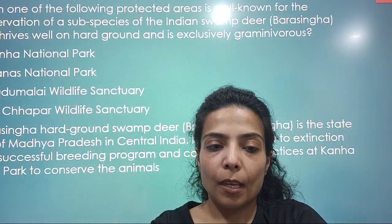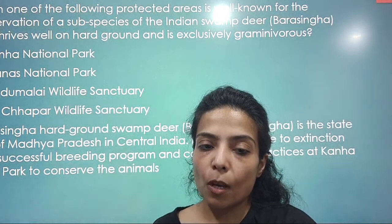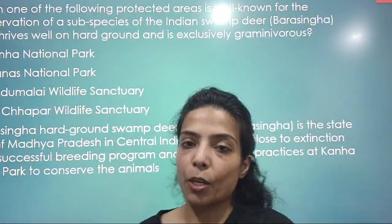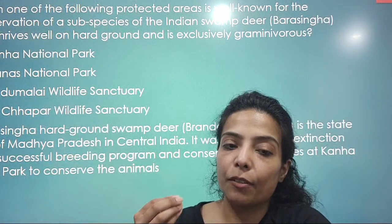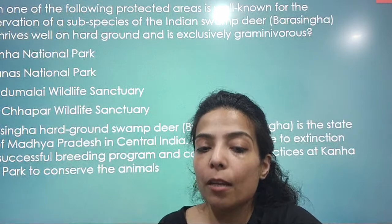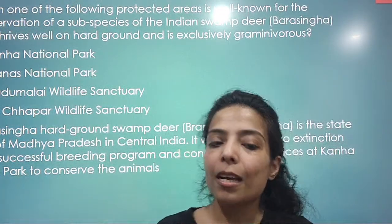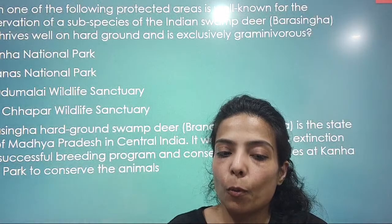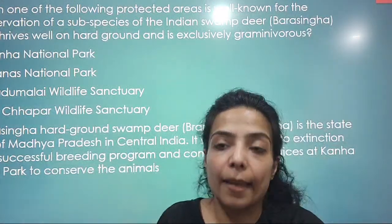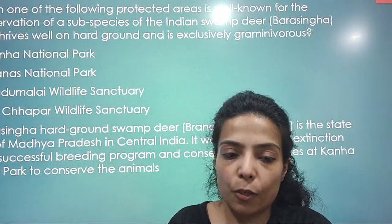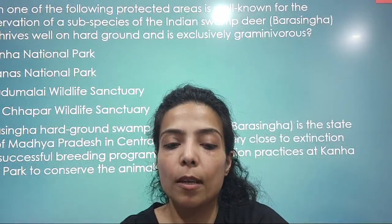Which one of the following protected areas is well known for conservation of a subspecies of the Indian Swamp Deer? The Indian Swamp Deer — also known as Barasingha — thrives on hard ground and is exclusively a grazer. Barasingha conservation practices have been notable and the answer is Kanha National Park, which is in Madhya Pradesh. The breeding program for Barasingha is very large in Kanha National Park.